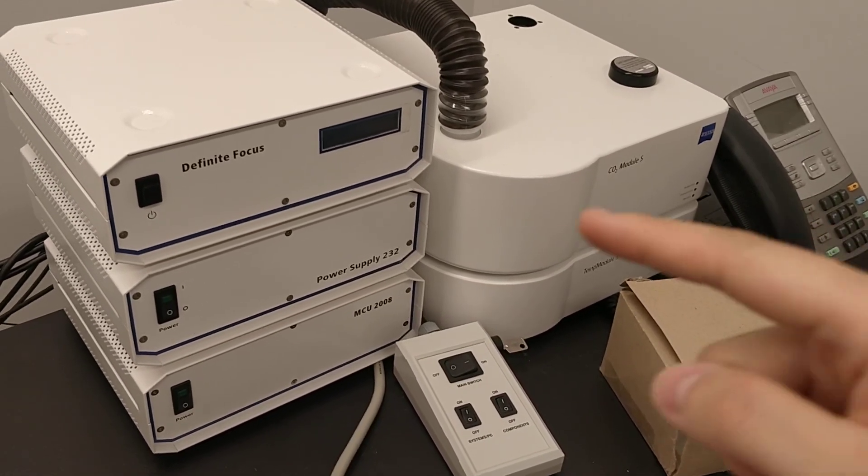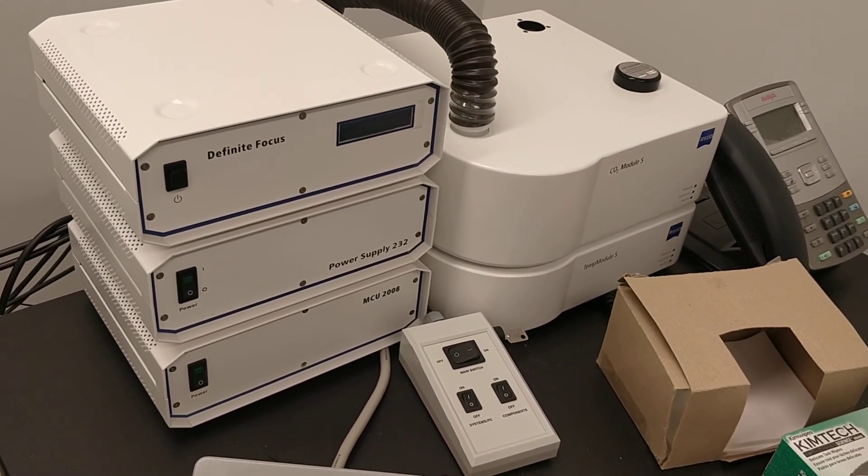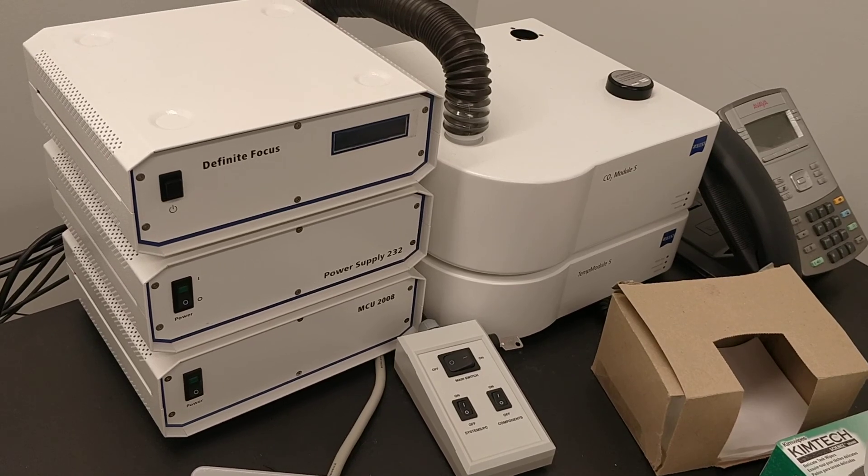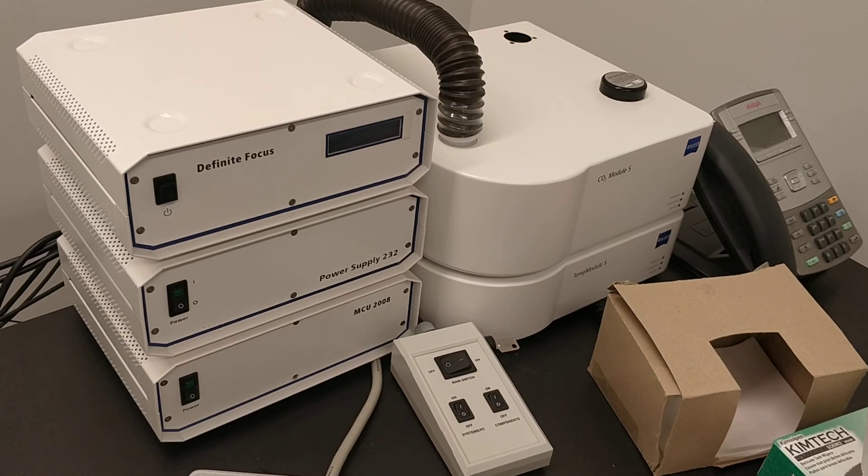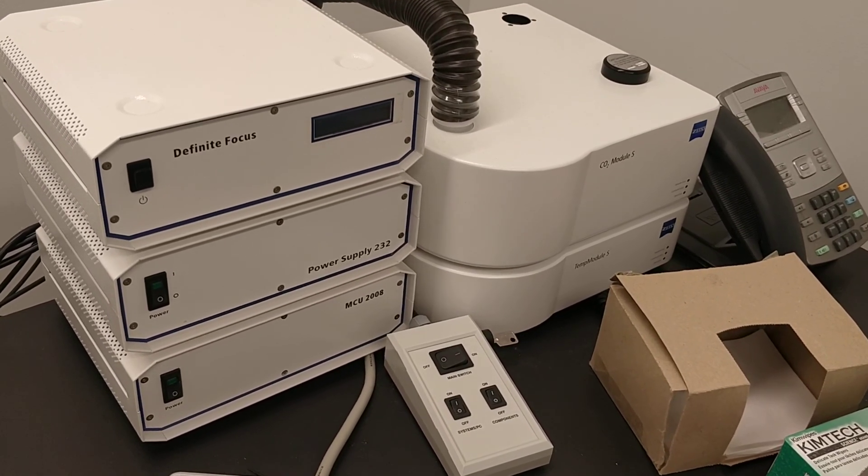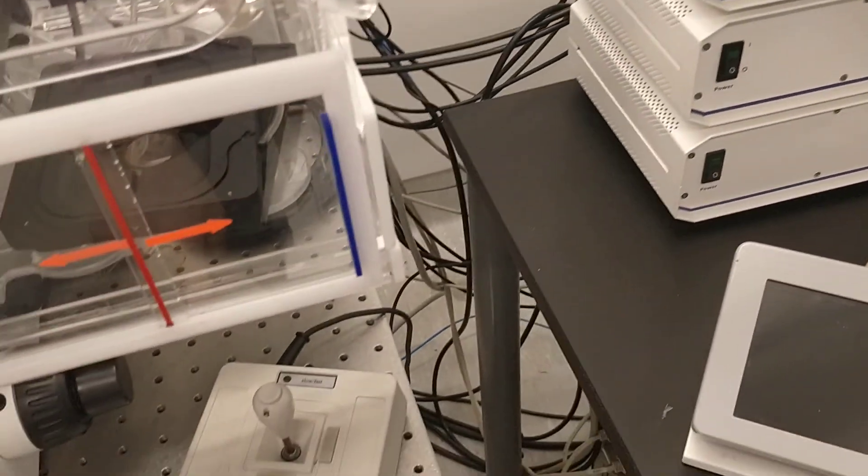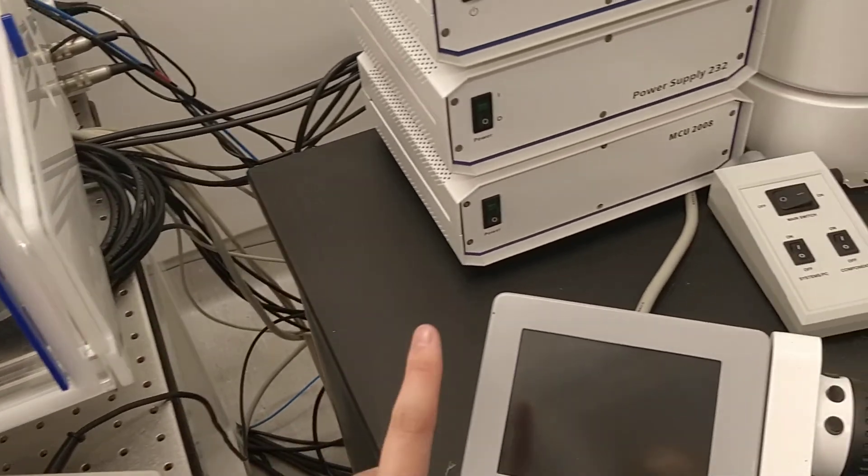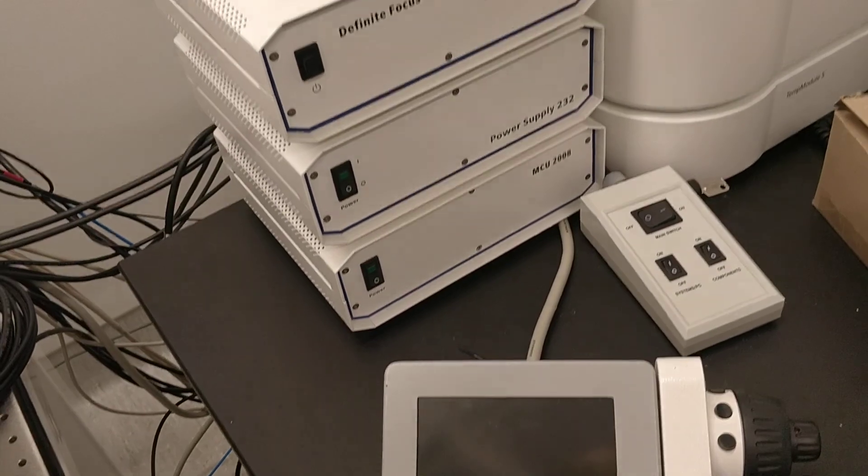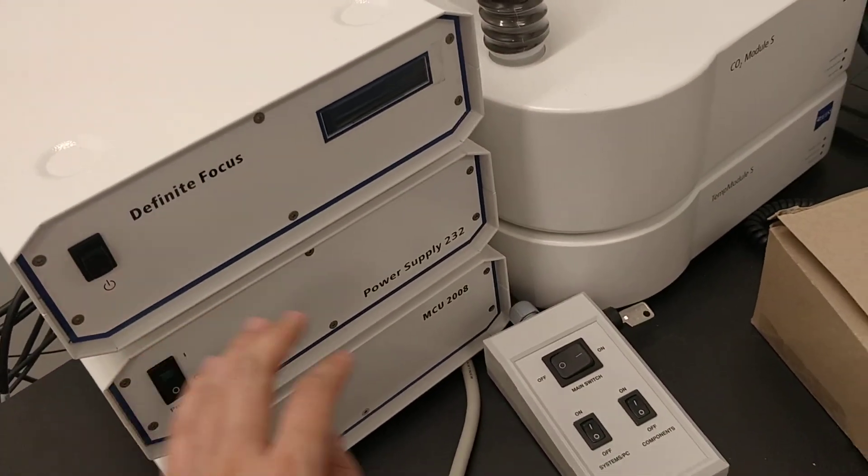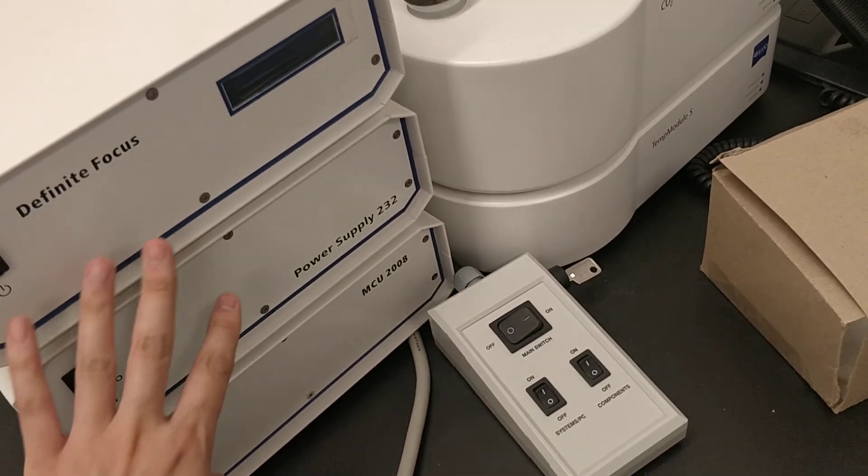The power 232, the middle one, this one is the power supply for the microscope itself. Usually, if you have the simpler one, they have a button behind the microscope. This is exactly the same thing, just the power button for the microscope itself. The MCE 2008, the lower one, this one is for the joystick itself. So if the joystick doesn't work, most likely this one is not switched on or is not connected. But all three of those are connected to this. So you don't really need to touch this.